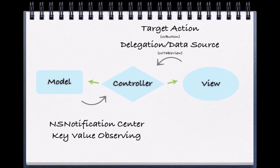In our last video, we learned that the controller communicates with both the model and the view by directly updating the view's objects in code, as well as accessing the model objects and creating instances of them. Now we want to learn how the model and the view communicate with the controller. If we look at our diagram here, we see that our controller has green arrows, meaning that it always has access to all the information in both the model and the view. However, we have grey arrows from the view and the model back to the controller, which hints that views and models communicate slightly differently than our controller does to our view and our model.